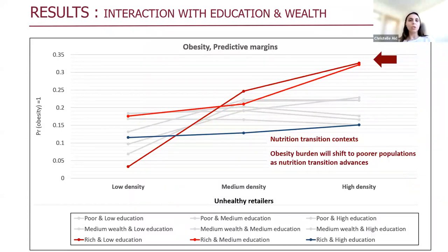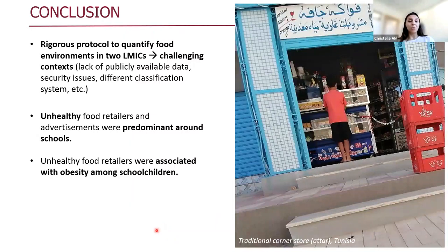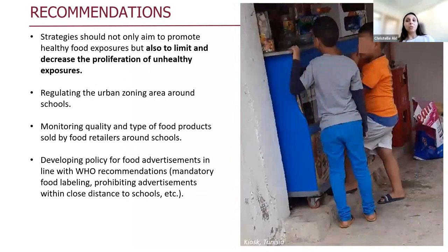However, in line with the nutrition transition literature, we expect that the obesity burden will shift to poorer populations as nutrition transition advances and awareness increases. To conclude, we were able to implement a rigorous protocol to quantify food environment in low- and middle-income countries, despite challenging contexts including lack of publicly available data, security issues, and different classification systems. We also found that unhealthy food retailers and advertising were predominant around schools in both contexts. We demonstrated that unhealthy food retailers were associated with obesity among school children in Greater Tunis. The next steps would be to develop and implement strategies to improve children's nutritional status. Our findings suggest that strategies should not only aim to promote healthy food exposure but should also try to limit and decrease the proliferation of unhealthy exposure.